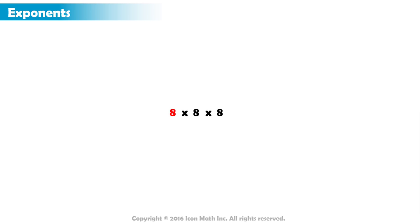Can you write this expression in exponential notation? 8 times 8 times 8. The base is the number being multiplied, so the base is 8. The exponent is the number of times we multiply the base by itself. There are 1, 2, 3 eights. So the exponent is 3. 8 times 8 times 8 equals 8 to the power of 3.